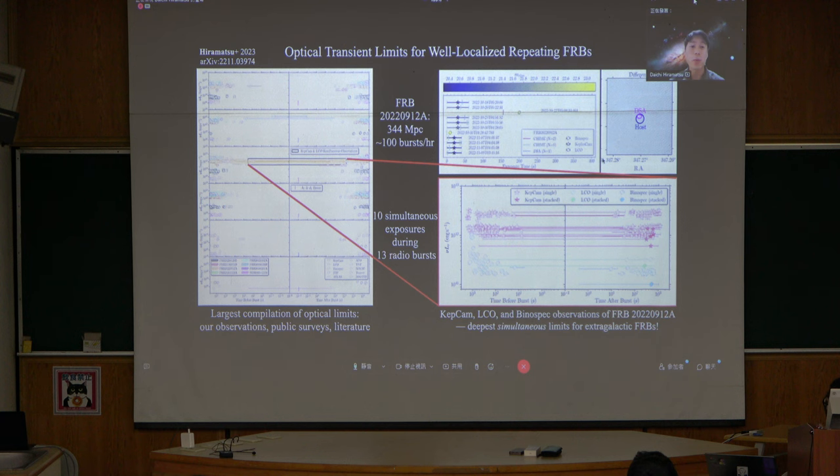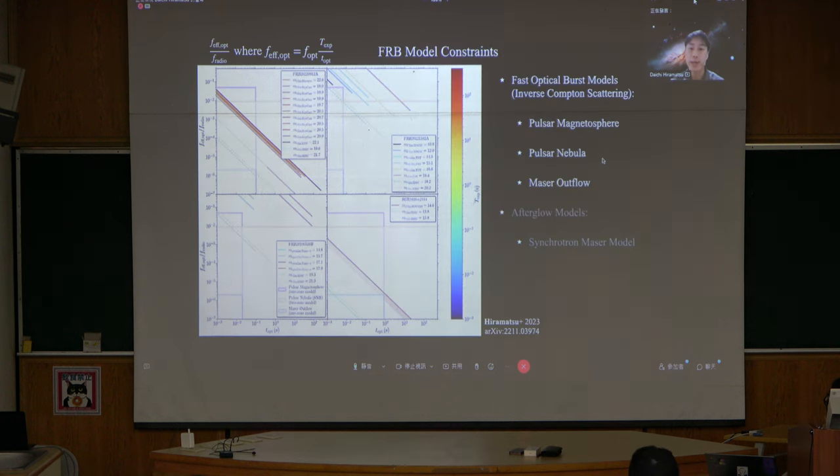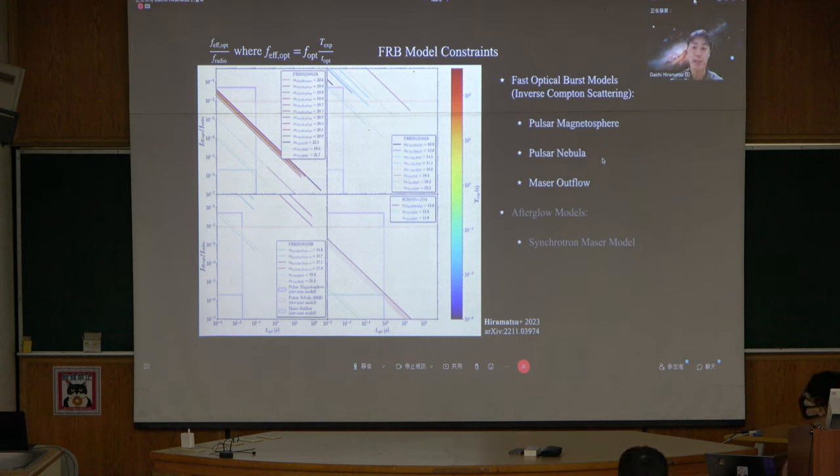What we can do with these optical limits is to compare some FRB models. In this case, I'm comparing fast optical burst models. These are some inverse Compton scattering mechanisms happening on pulsar magnetosphere, pulsar nebula, or maser outflow. Since the optical exposure time that we are using is longer than the duration of these optical burst models, we are showing the effective optical limit, optical flux limit over the full exposure time times the exposure time divided by the optical duration of these bursts.